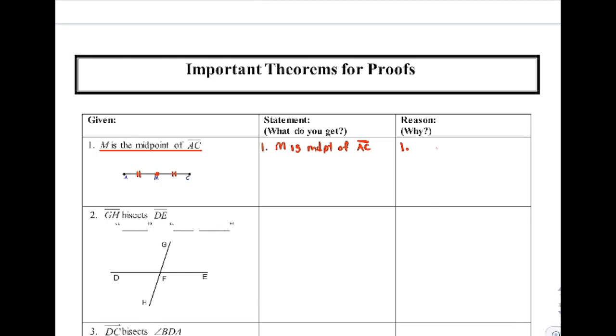Reason number one is because they told us. That's how we knew. And you say because they told us like this: you write the word 'given' because it sounds a little better than because they told us. So M is the midpoint of AC and the reason for that is because it was given.